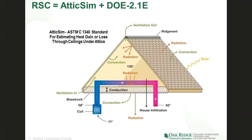Under the hood, the Roof Savings Calculator is two simulation engines. One is called DOE2-1E, which is a whole building simulation package. Then AtticSim, which does high fidelity physics simulations of what goes on in a roof and attic assembly — calculating conduction, convection, and radiation at every surface. AtticSim is part of a standard called ASTM C1340, and as part of a standard, it goes through a thorough vetting process with lots of review by industry before being accepted. We've tied this high fidelity physics simulation of the roof and attic to a whole building model so that we know if you add insulation or change your roof, how much energy you would save in heating and cooling your home.